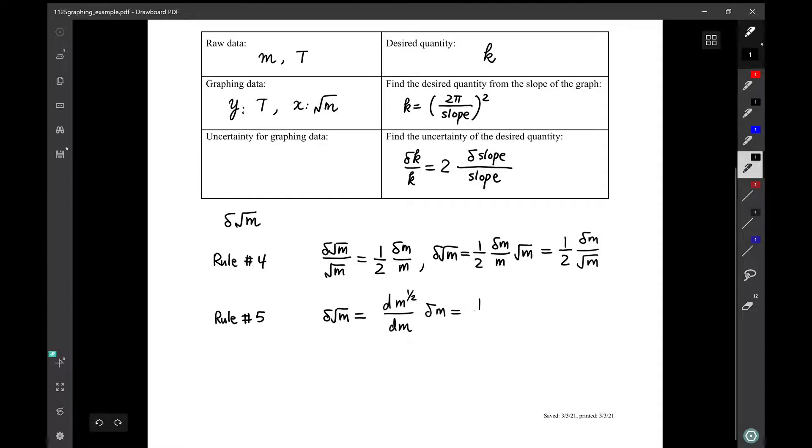That's the derivative times δm. So if you write it, you can write it as δm over 2√m. And the two methods will give you the same result.